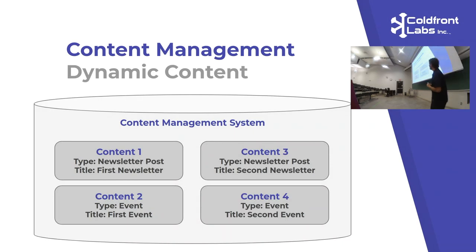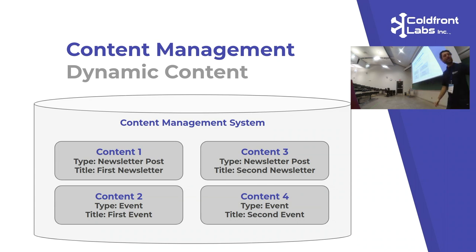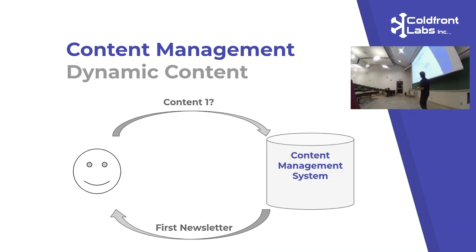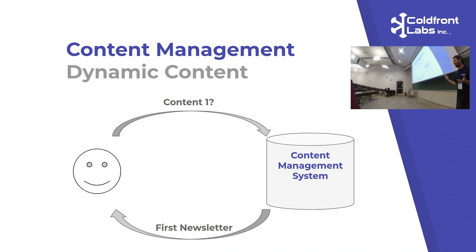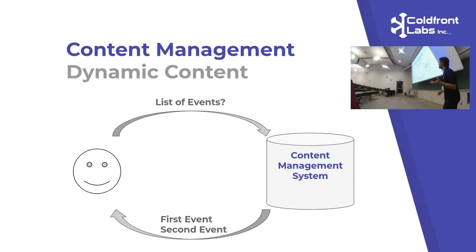Here's an example of a content management system with some content in it. It has four pieces of content: Content 1 is a newsletter, Content 2 is an event, Content 3 is another newsletter, Content 4 is another event. A user via URL can ask for Content 1, and the CMS serves out that particular piece of content. It also lets you do lists right away — ask for all your events and the CMS knows what pieces of content are events and returns them all.